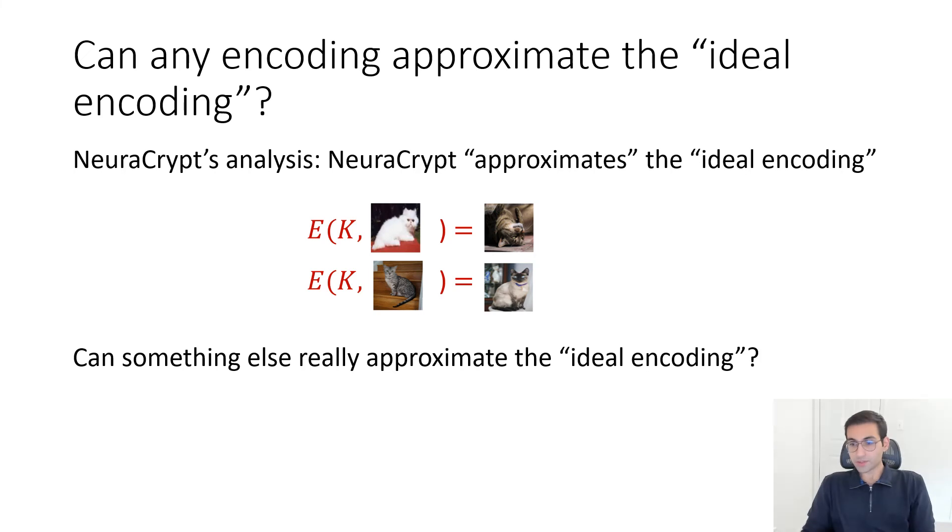So far, we showed NeuroCrypt is not private. But if you remember, they had an ideal encoding mechanism that they proved to be private according to their definition. One question that remains is, is there any approximation of this ideal encoding? NeuroCrypt is not a good approximation, but is there any other approximation? This ideal encoding was a simple mapping between a cat image to another cat image. If you give me a cat image, the encoding will be just another random cat image among all cat images in the universe.